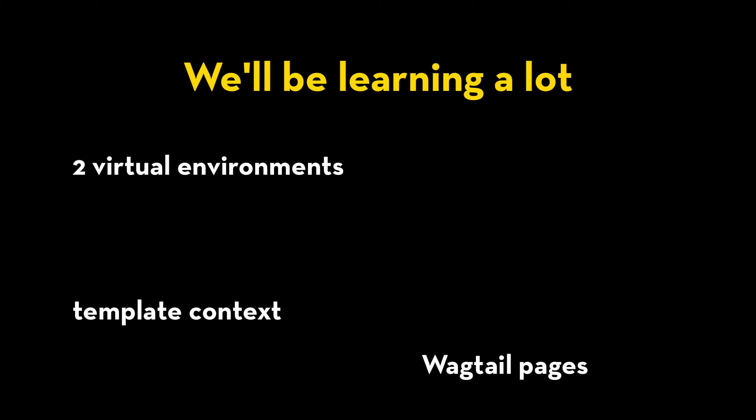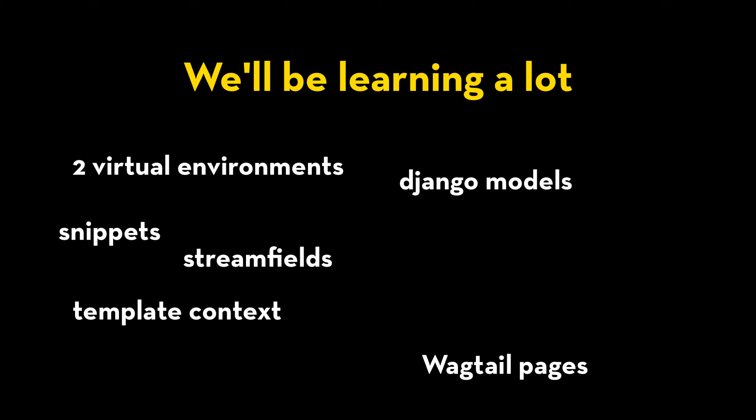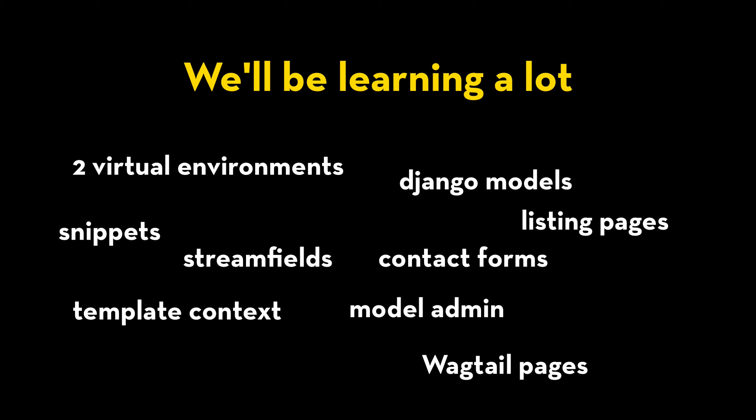We're going to add, create, and manage several different stream field types. We'll create a custom Django model and then allow Wagtail to modify it, use it, enable it, and reuse the data all over the place in a thing called a snippet. We'll create listing and detail pages, and we'll even create a contact form that can email you.